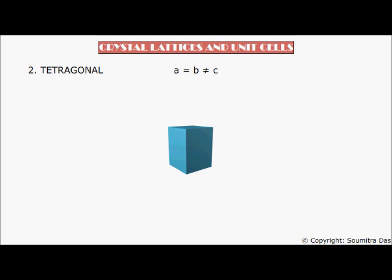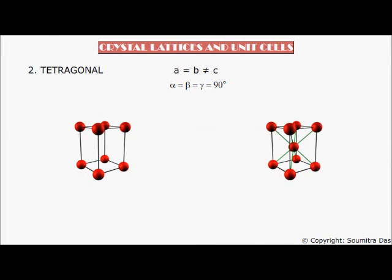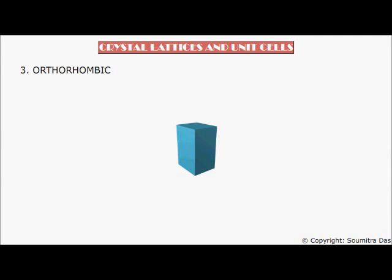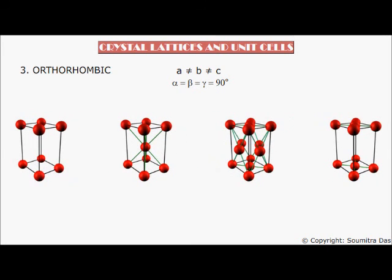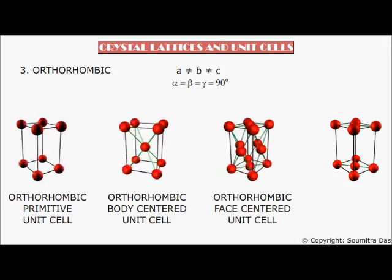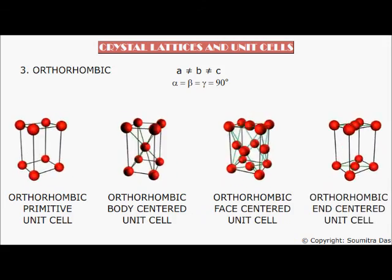Number two: Tetragonal. Here, a = b ≠ c and alpha = beta = gamma = 90 degrees. Two forms of tetragonal unit cells exist: tetragonal primitive and tetragonal body-centered unit cells. Number three: Orthorhombic. Here, a ≠ b ≠ c but alpha = beta = gamma = 90 degrees. Four forms of orthorhombic unit cells exist: orthorhombic primitive, orthorhombic body-centered, orthorhombic face-centered, and orthorhombic end-centered unit cells.